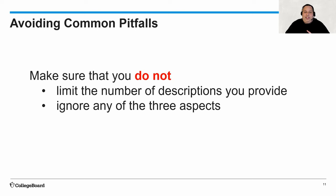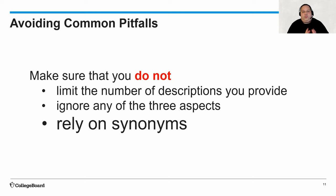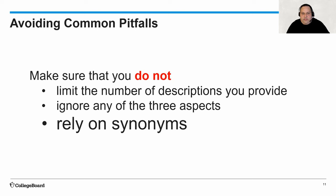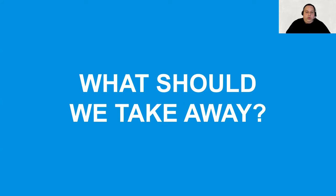The biggest pitfall — the number one thing I see students do — is relying on synonyms. Saying that a character is funny, comedic, and humorous is not the end goal, because at the end of the day you've only given me one aspect of this character. Go ahead and pause the video again, look at your list, and check: do you have words describing each of the three aspects? If you have words that are essentially synonyms of one another, cross one out and push yourself to extend the characterization of the person you've selected.